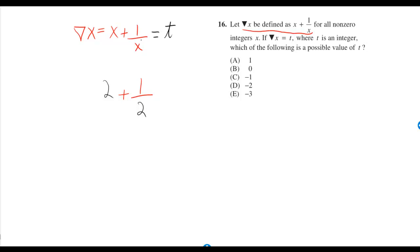So how can we make sure that 1 over x, that piece, comes out to be an integer? The only way to do it is by plugging in 1 or negative 1.